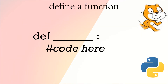In Python, when we deal with functions we need to define a function, which is writing the code of the function. To define it we use 'def', we give it a name, then a colon, and then we put the code underneath.